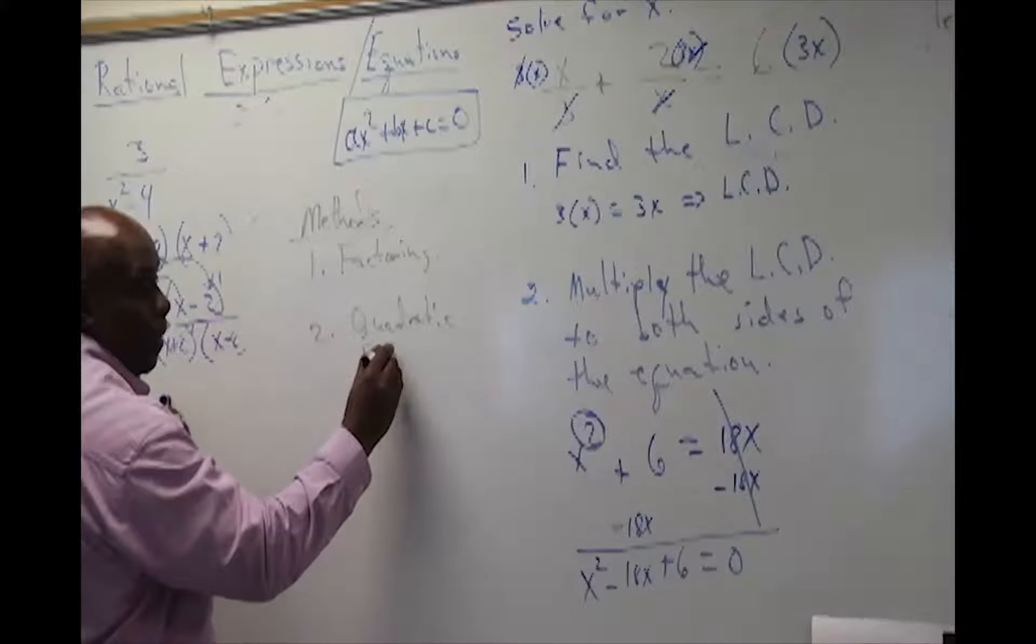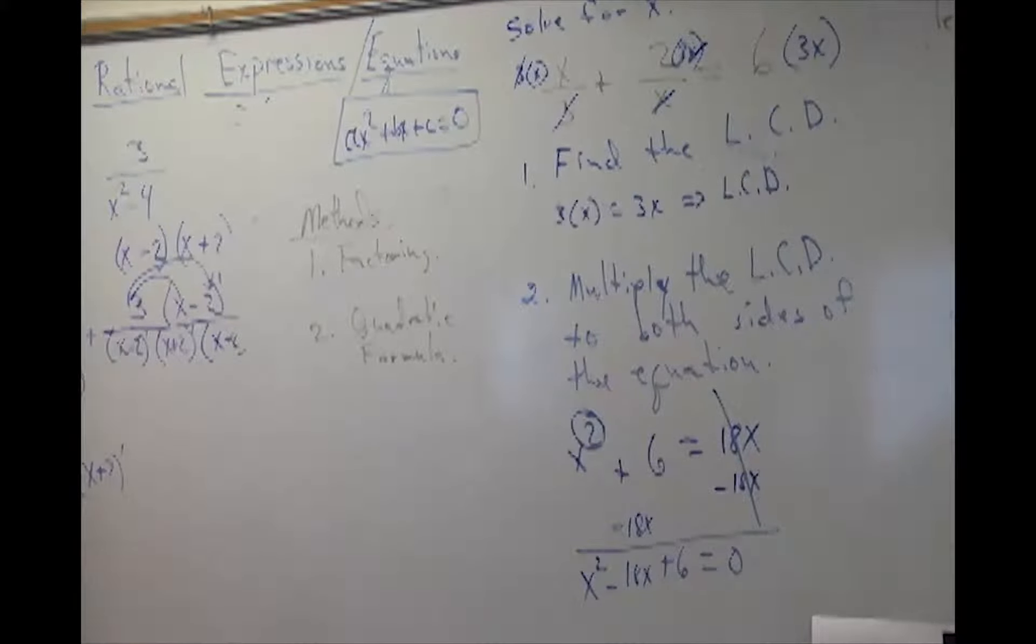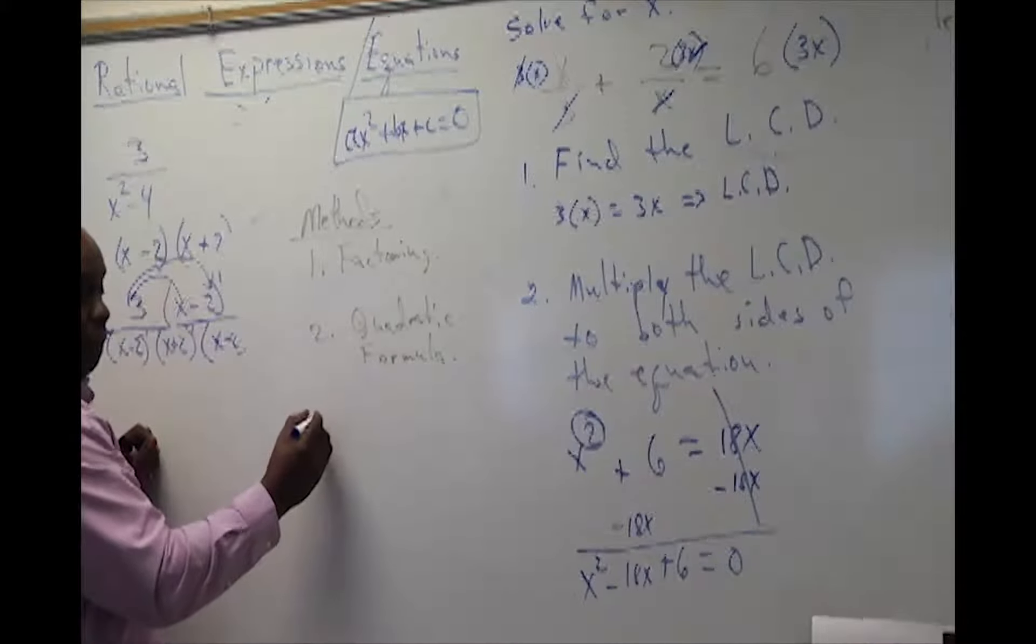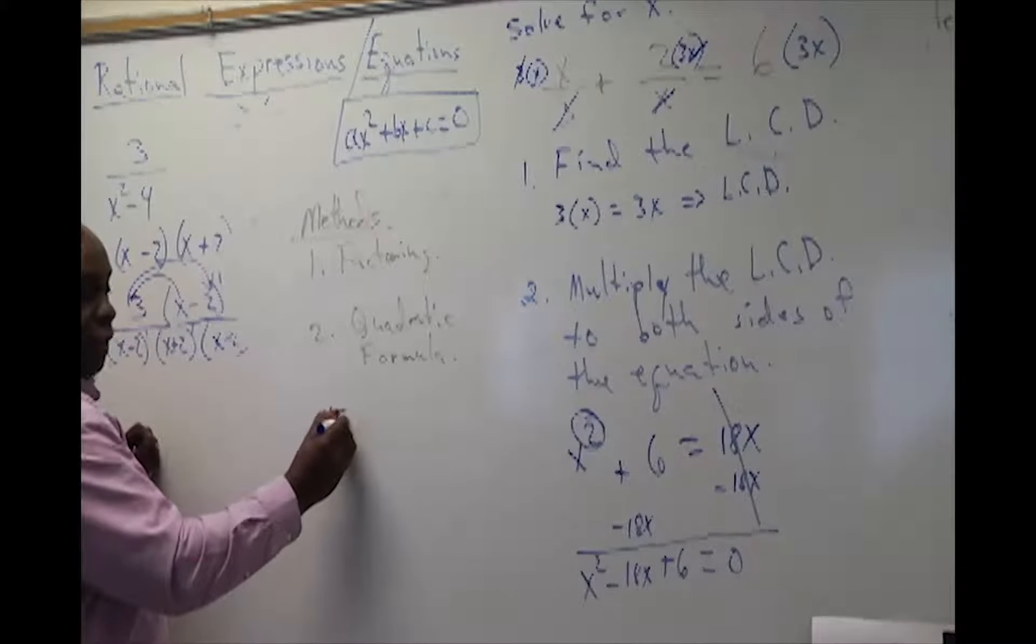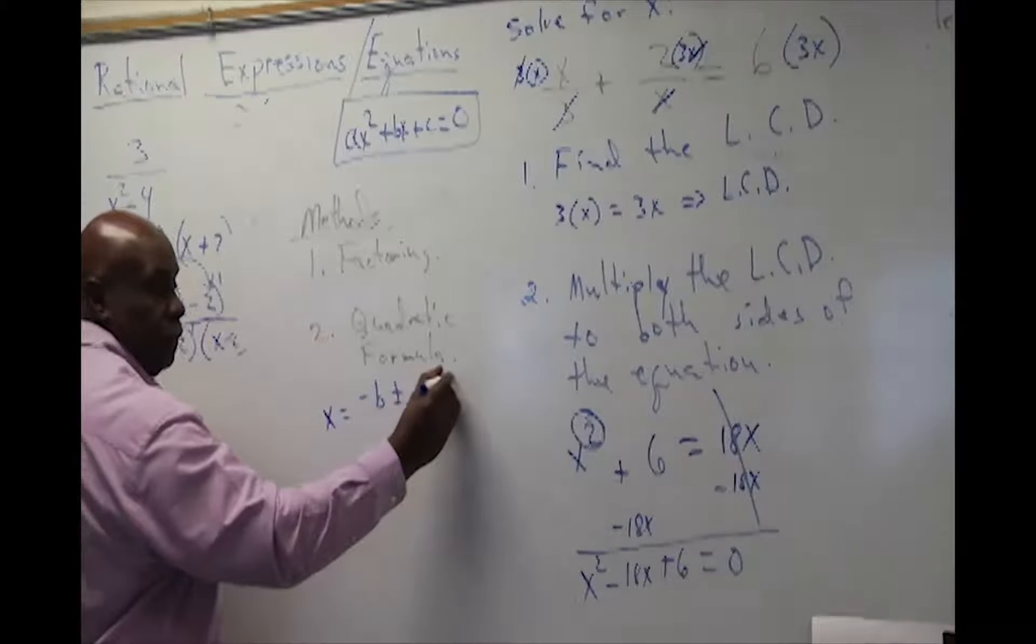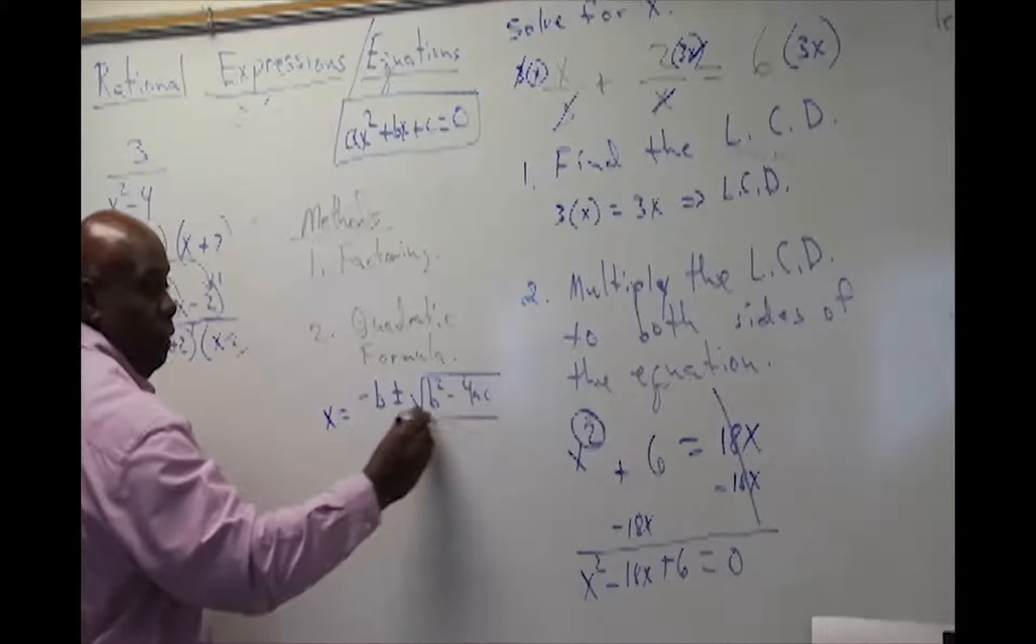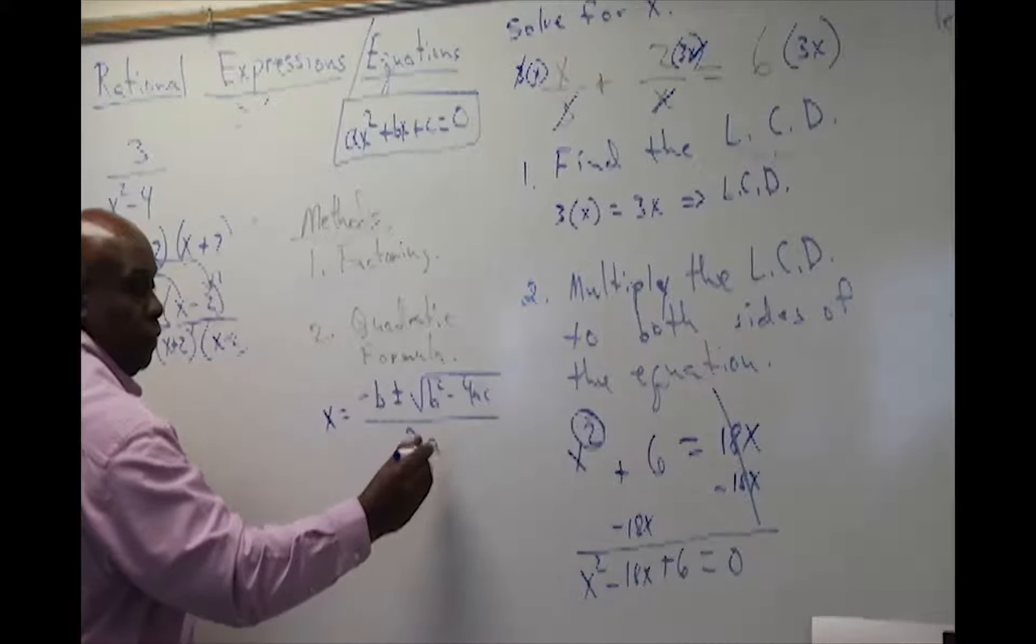What is the quadratic formula? Well, you know about factoring because we have discussed that earlier, but quadratic formula, what is that? That formula says that you have x equal to negative b plus or minus the square root of b squared minus 4ac all over 2a.